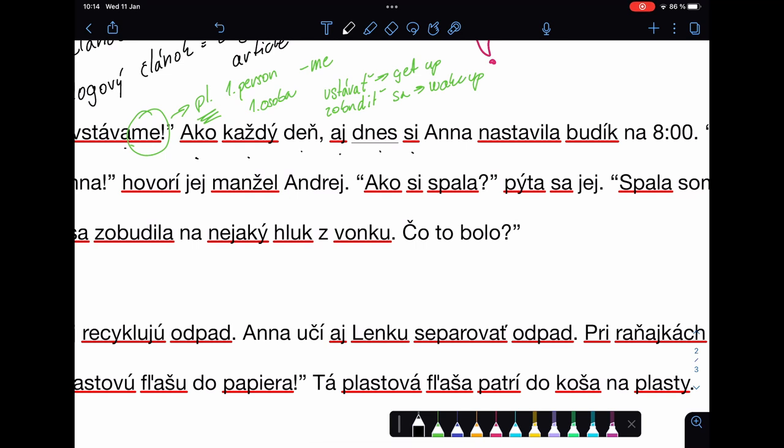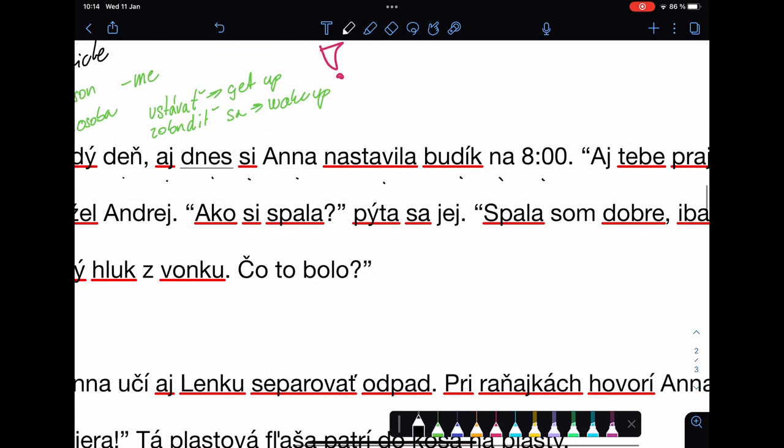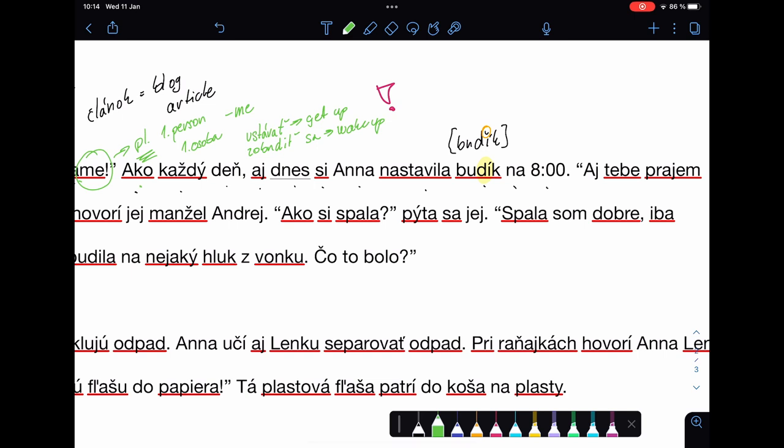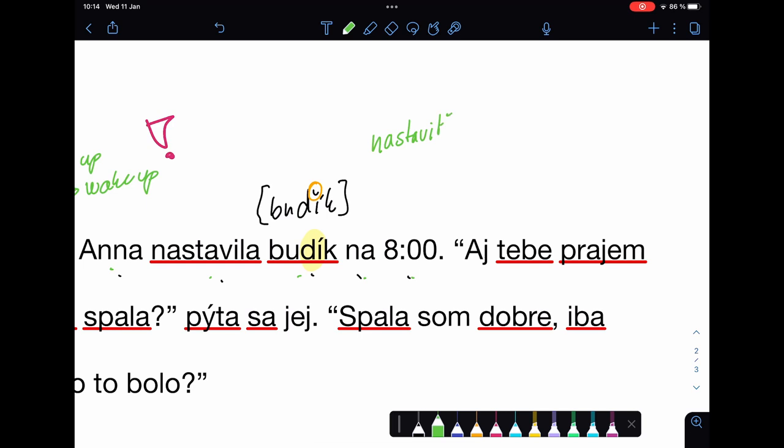Ako každý deň, aj dnes si Anna nastavila budík na osem nula nula. We can see these two letters, the d and i, and we pronounce as budík. Bu-dík, like this. But we don't write this upside down big here. So, as every day, also today, Anna set alarm o'clock on eight o'clock. Nastaviť budík, to set alarm o'clock.